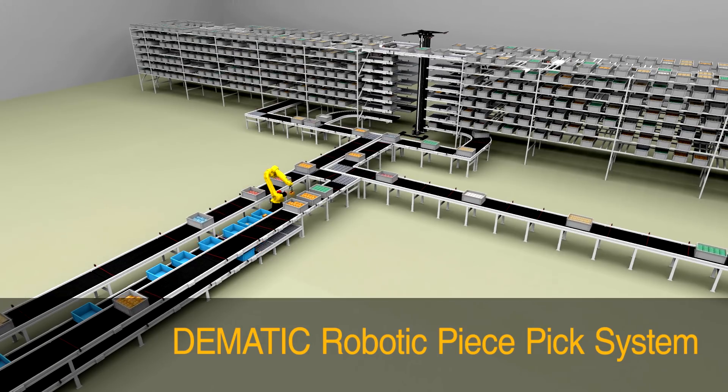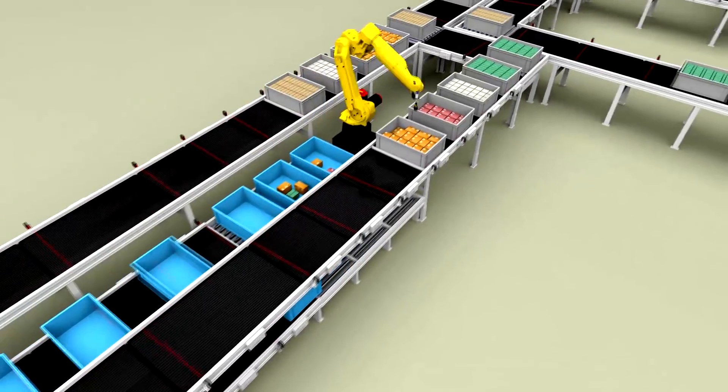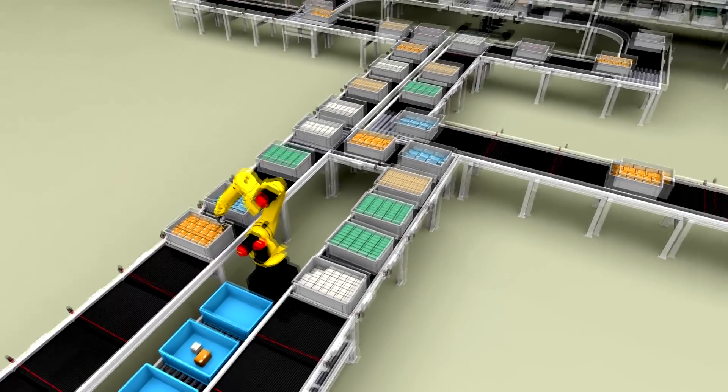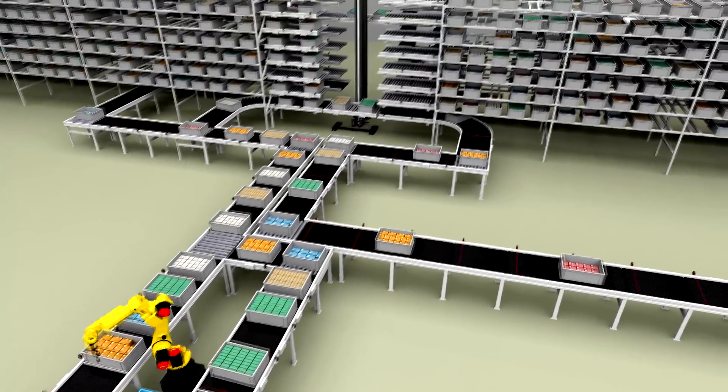Dematic RapidPick XT is a goods to robot piece pick system ideal for e-commerce fulfillment, retail store replenishment and wholesale distribution applications.